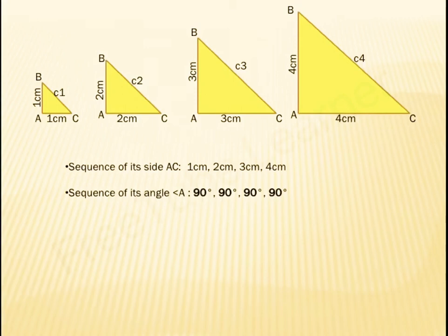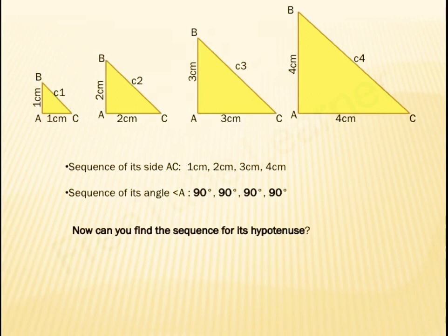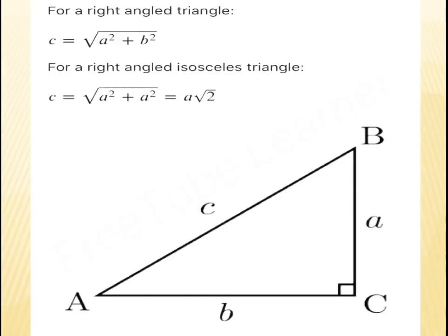As this triangle is an isosceles right-angled triangle, angle A is 90 degrees. Now, can you find the sequence for its hypotenuse? We know that the hypotenuse is the longest side of this triangle, so we need to find C1, C2, C3, and C4. We recall the formula: for a right-angled triangle, hypotenuse C equals the square root of A squared plus B squared, where A and B are the two sides of the triangle.